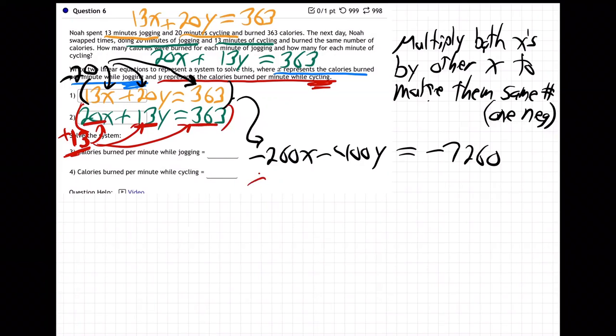And then the bottom equation, so I'm going to take that 13, I'm going to go times boom to boom to boom. That's going to be positive 260X, the other opposites, then 13 times 13 is 169, positive 169Y equals positive, 13 times 363, definitely need a calculator, 4719.